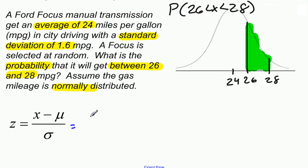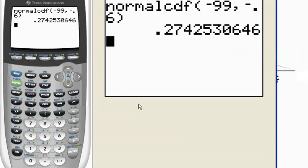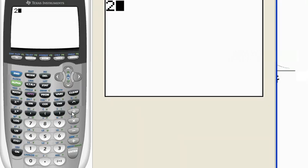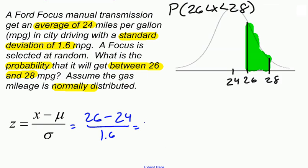So let's start with 28, well, let's start with 26. 26 minus the mean, which is 24, divided by the standard deviation, which is 1.6. Let me grab my calculator. That's going to be 2 divided by 1.6. So here we go, that's 2 divided by 1.6, which is 1.25. Here we go, 1.25. So this z-score right here is 1.25.